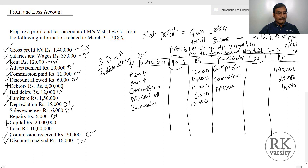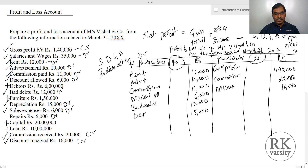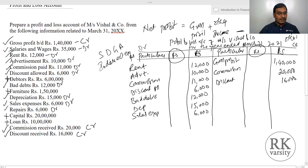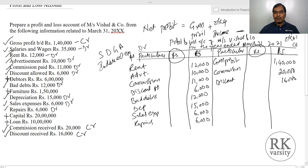Depreciation is 15,000. Sales expenses are 6,000. Repairs are 6,000, and another entry of 4,000. We have made entries for all transactions in our profit and loss account.